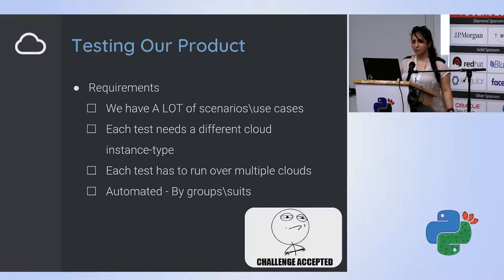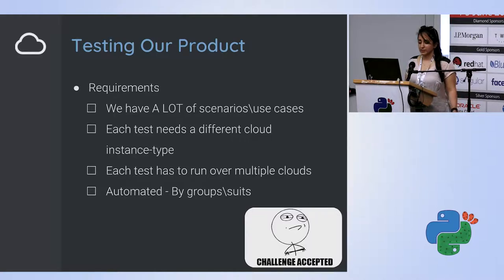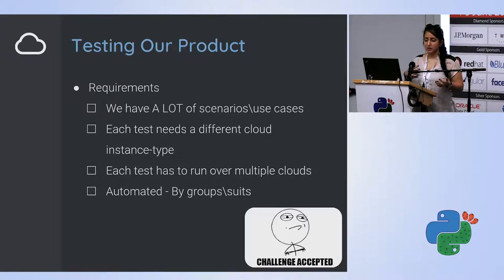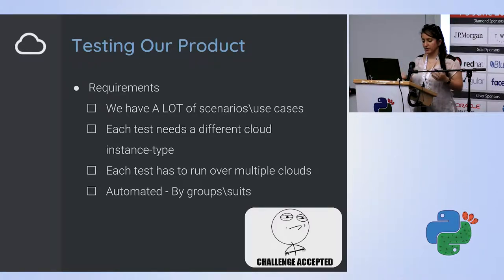We have four main requirements. The first one: we have a lot of scenarios and use cases. Every customer can come with whatever network, guests, or configuration and say this is what I want to run smoothly on your infrastructure. The second is that each test needs a different cloud instance. Maybe I want to run two guests on one cloud instance and then I might need more than one CPU. Sometimes I want to run five or ten guests, and that changes all of my hardware requirements.